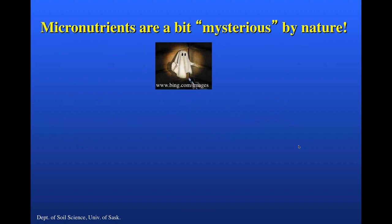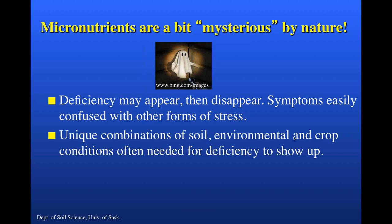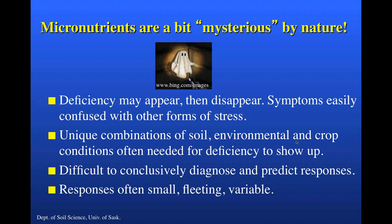When we think about micronutrients, we tend to think of them as a bit mysterious or ghostly. The deficiencies of micronutrients sometimes appear and then disappear. They are also masters of disguise in that symptoms are easily confused with other forms of stress. It's often a unique combination of soil, environmental, and crop conditions needed for that deficiency to manifest itself. This makes it rather difficult and inherently challenging to conclusively diagnose and predict responses to micronutrient fertilization. We often see responses to micronutrients that are small, fleeting, and variable.